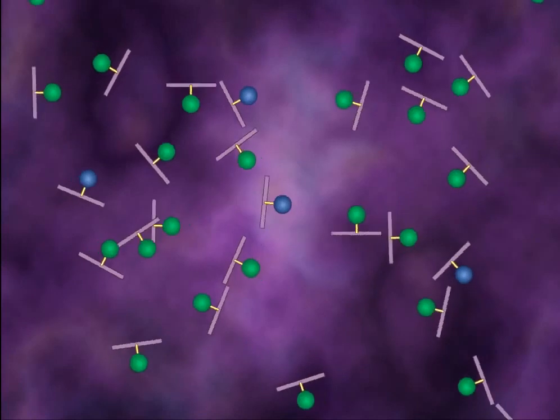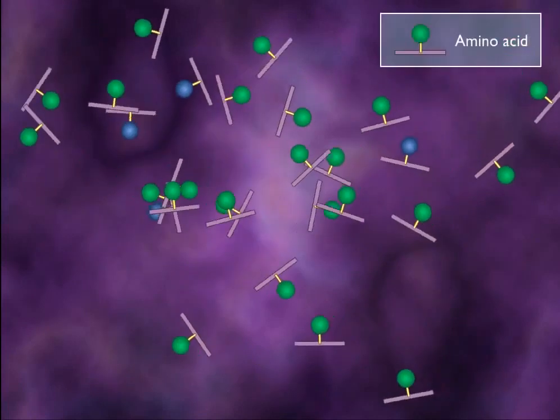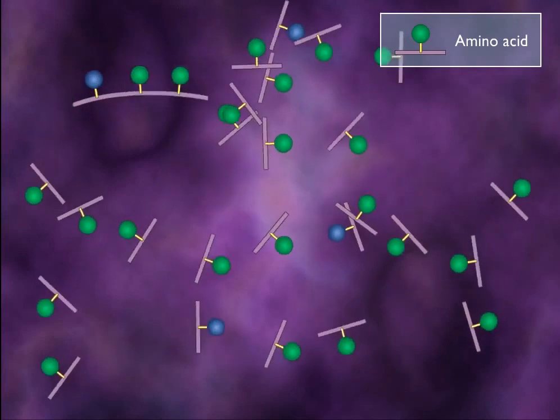Proteins are synthesized by polymerizing amino acids. The polymerization occurs by repeatedly forming peptide bonds that link individual amino acids together into a chain.